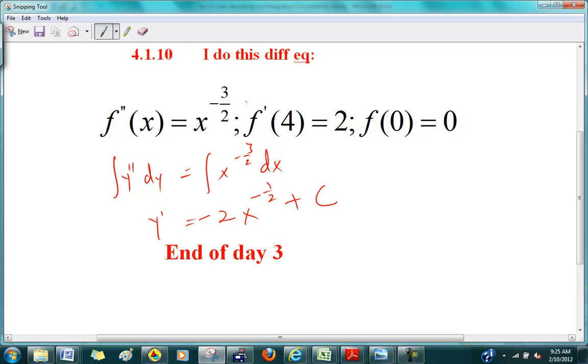So, if you look at the first condition that's given to you, it's this one here. You are given that when x is four, y prime is two. So, you're going to plug it in here. So, two equals minus two times four to the negative a half plus c. So, tell me what c is equal to. What's four to the negative a half? A half. A half times negative two. Negative one, so c is equal to three.